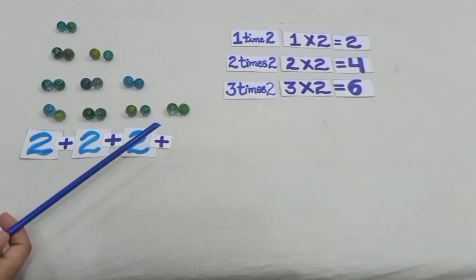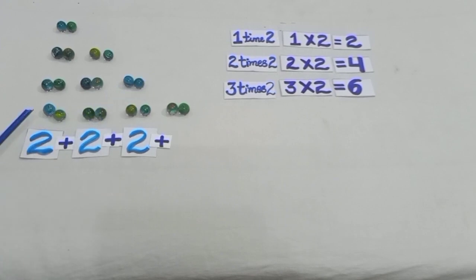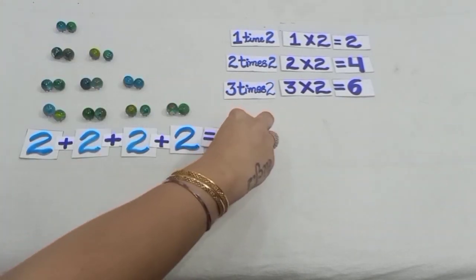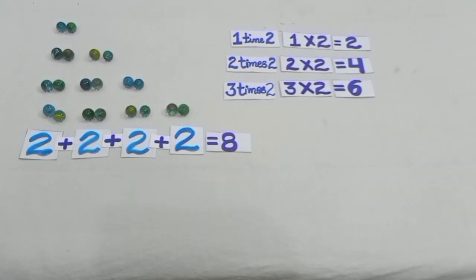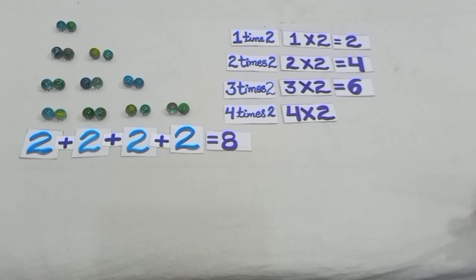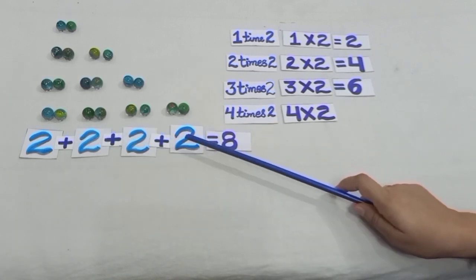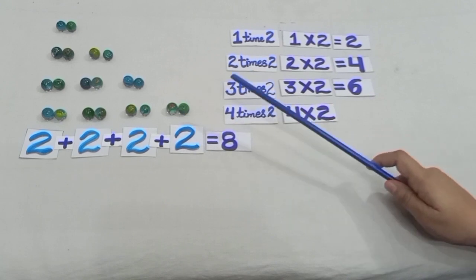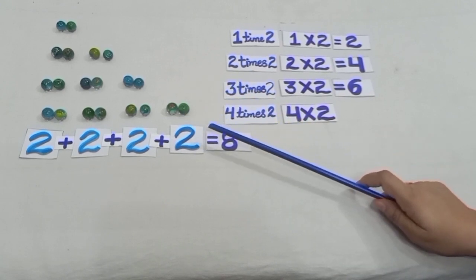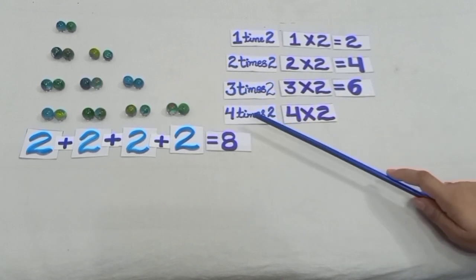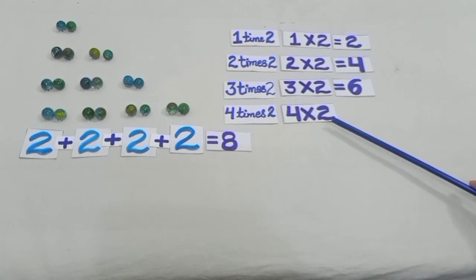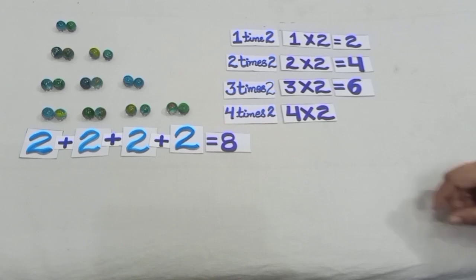Earlier we had 6 marbles and now 2 marbles more, so we have 8 marbles. You can see we have 4 groups with 2 marbles in each group. That means 4 times 2, and we write it as 4 into 2, which is equal to 8.